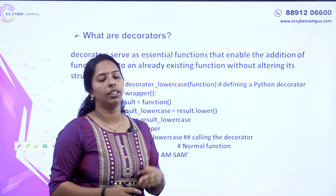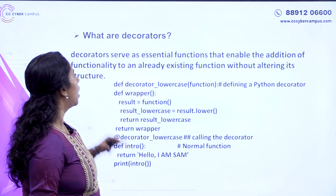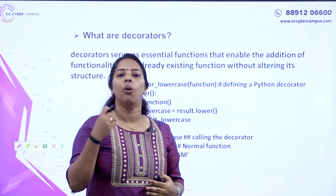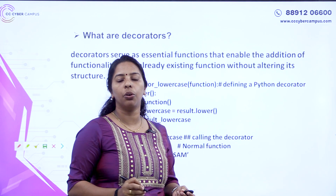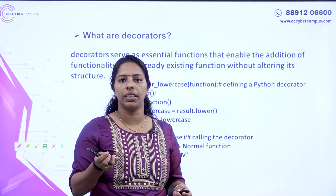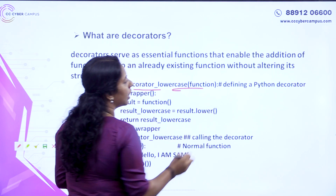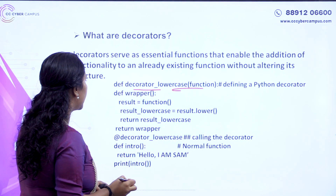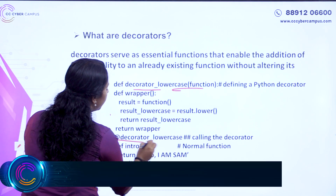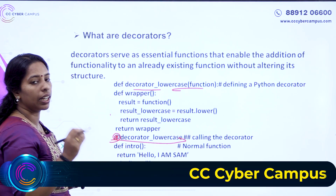Decorators are important. It is called an iterator. Decorators serve as an essential function that enables the addition of functionality to an already existing function without altering its structure. We have to access the function as a variable and use the function as an additional function. We call this function as a decorator, represented by the @ symbol.